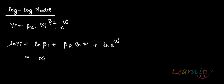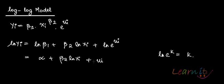Now, log of beta 1 would be a constant, so let's write it as alpha. You have alpha plus beta 2 log of x_i. Remember that log of e to the power k is just k, so the error term becomes simply u_i. This gives us log of y_i on the left side — this is the log-log model, with log of the dependent variable and log of the independent variable.